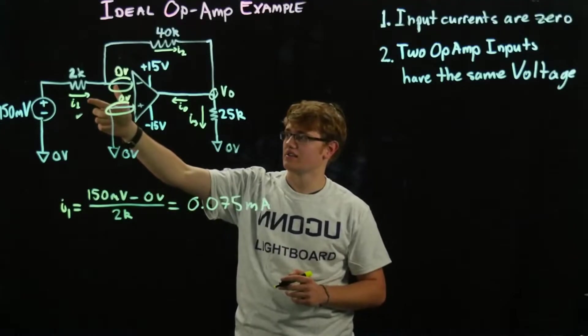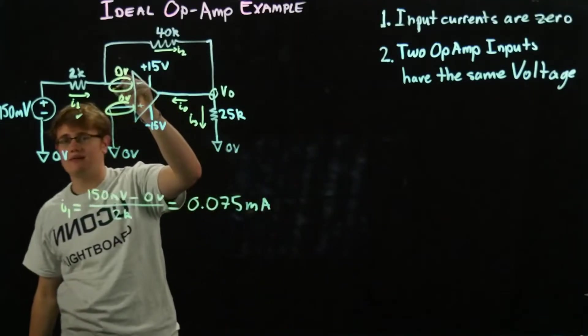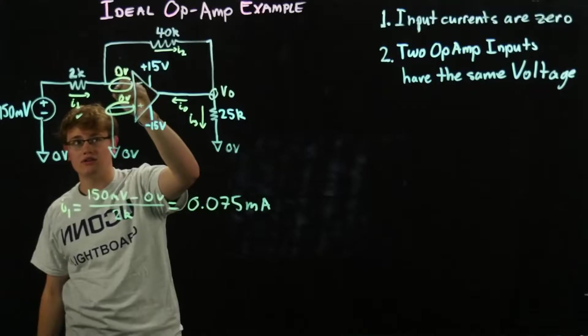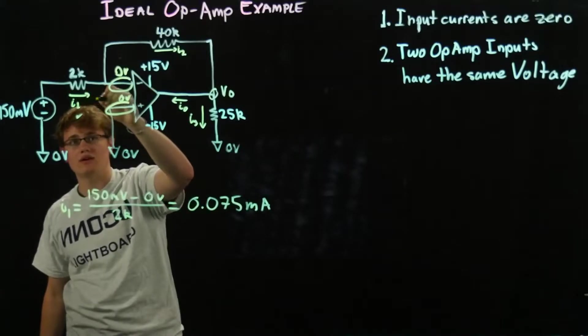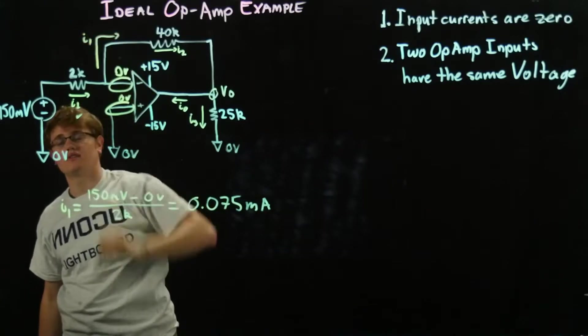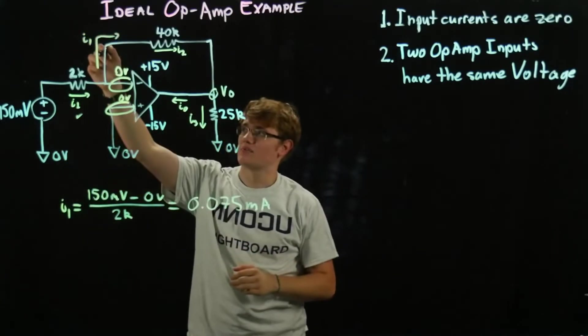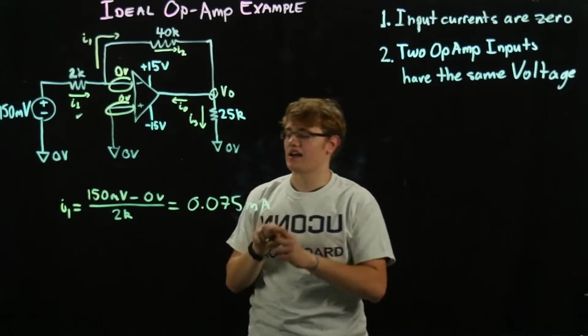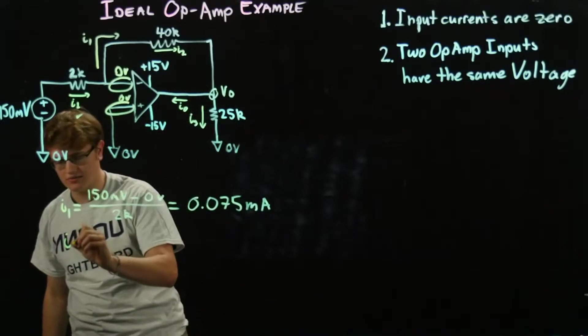But what we do know is I1. And since I can't have any current going through it, we know that this I1 has to go around here. So that's going to be I1. So since that's I1 and that's I2, we know that I2 has to be equal to I1.